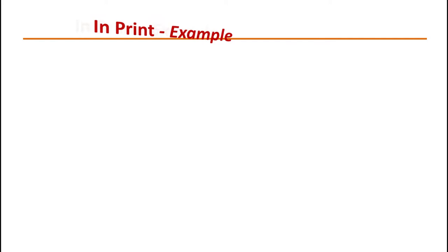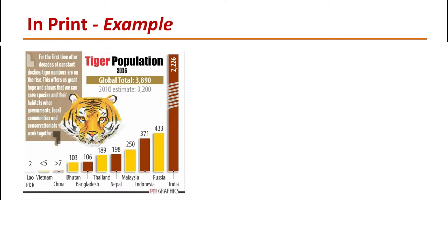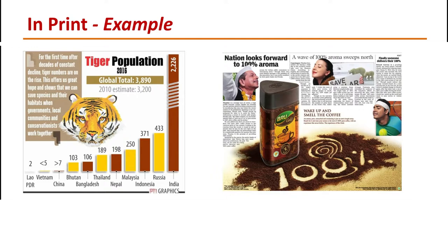As you see in this example, which is a graphic by PTI — Press Trust of India, a news agency — you get a fair idea about tiger population in various countries in 2016. In the second example, which is an advertisement, you can see texts and images are arranged to give you a feel of a newspaper.